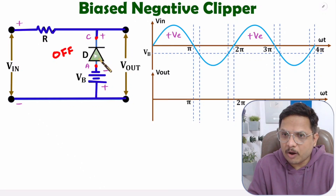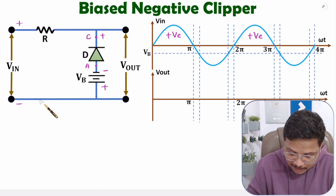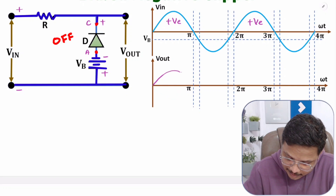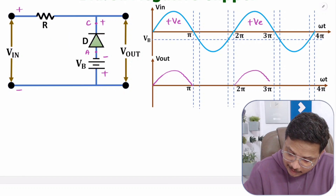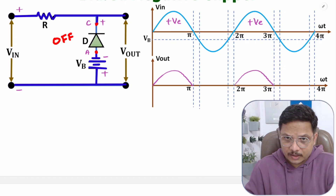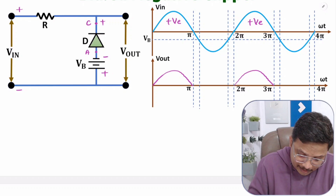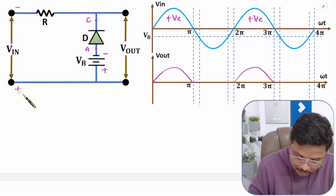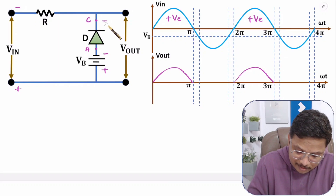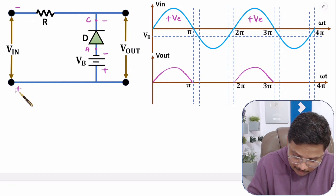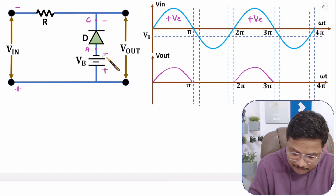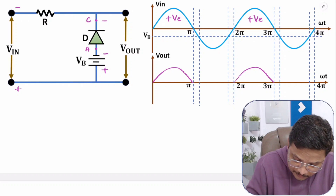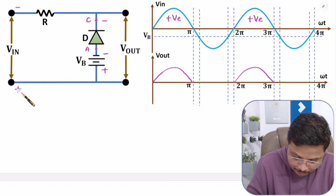So during the entire positive half cycle this diode stays in reverse bias, meaning it will be off. If it is off then the input will appear at the output. So V-in will appear at output during the positive half cycle. Now for the negative half cycle — during the negative half cycle this terminal is negative and this terminal is positive. So this negative comes over here and this positive comes over here. But already VB minus is connected over here.